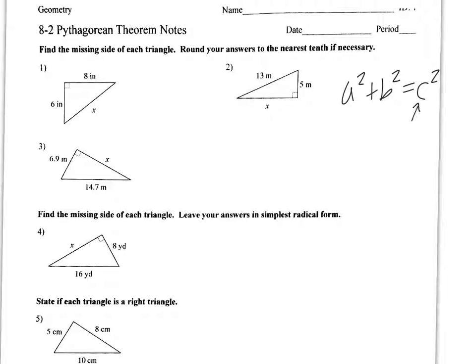Okay, remember C is the hypotenuse, which is the longest side, and it's across from the right angle.